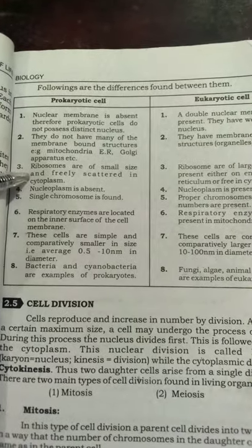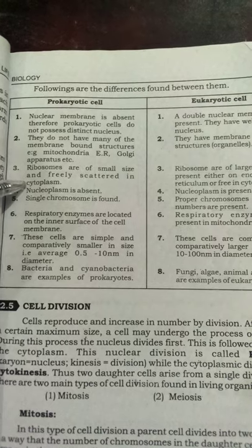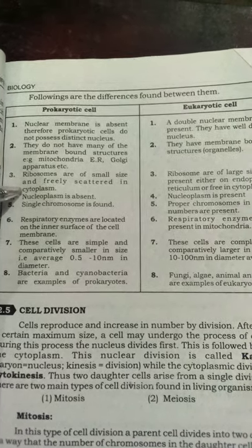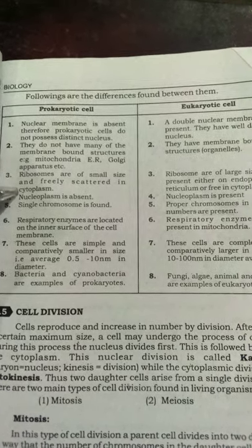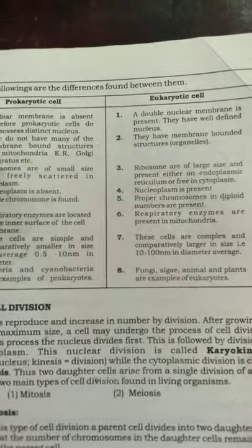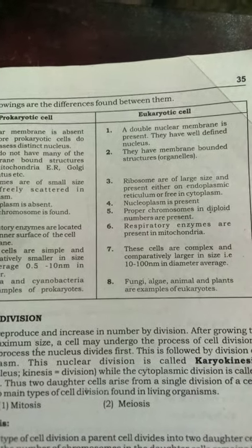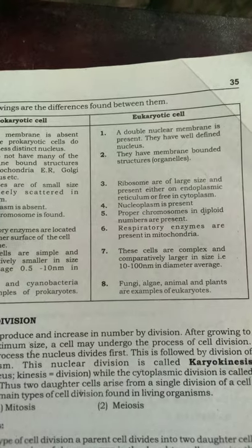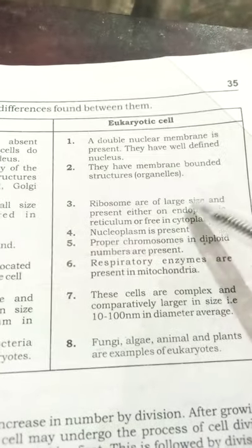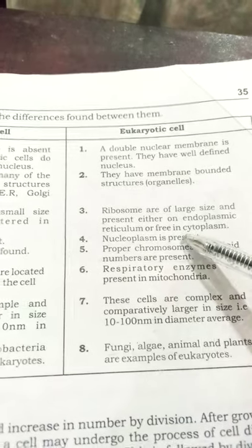Difference number three — ribosomes: in prokaryotic cells, ribosomes are of small size and freely scattered in the cytoplasm. In eukaryotic cells, ribosomes are of large size and are present either on the endoplasmic reticulum or free in the cytoplasm.